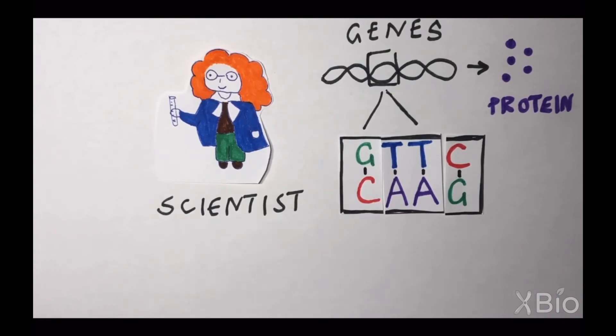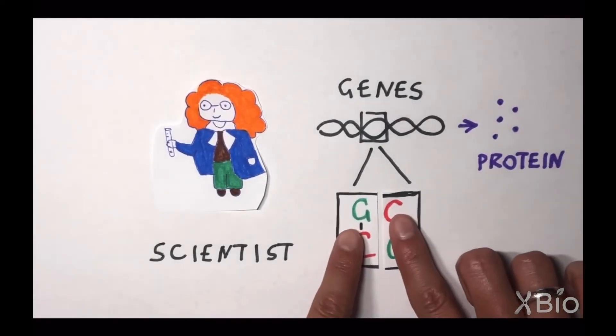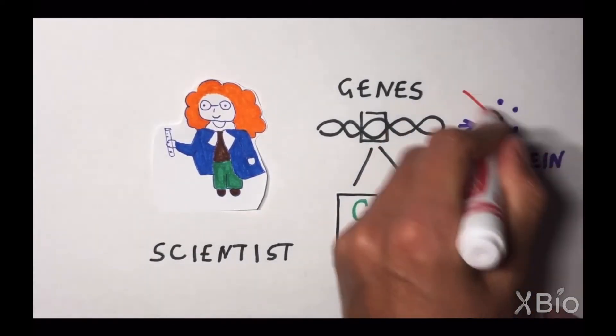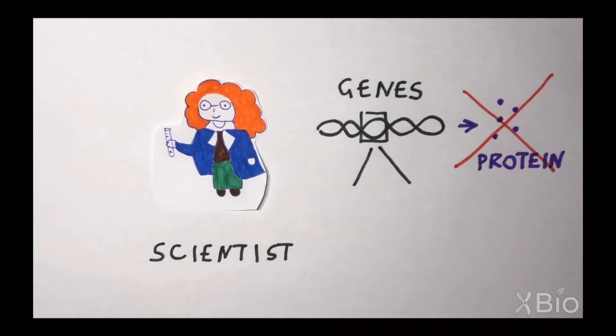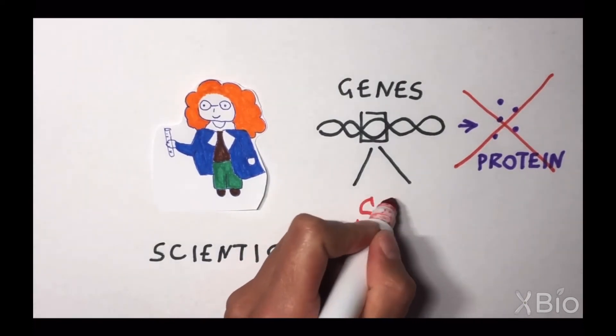But how do scientists do this? We don't actually need to remove the entire gene. Using molecular tools, we can insert a line in the genetic instructions that says stop making this protein.